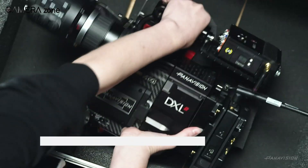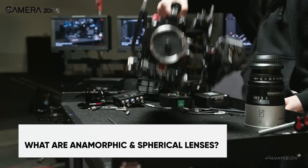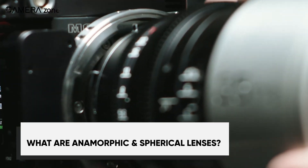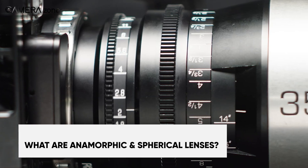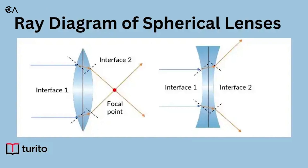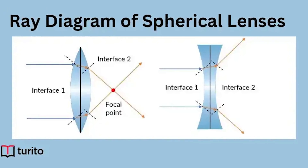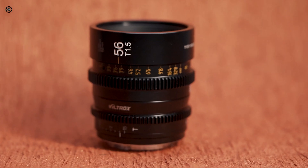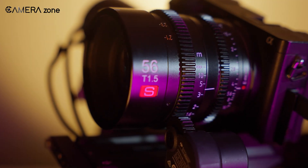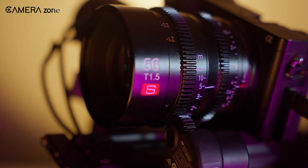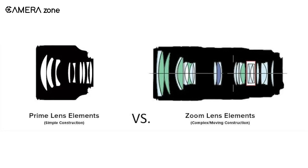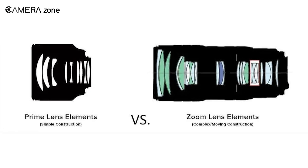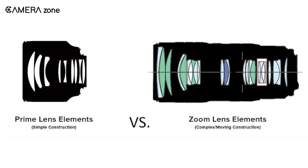Let's start with the basics. Spherical lenses are like the classic tools filmmakers use to capture images, and they've been around since the early days of movies. These lenses project images onto a camera sensor in a simple, straightforward way — they keep the image size and shape consistent without squeezing or stretching it. There are two main types of spherical lenses: prime lenses and zoom lenses.